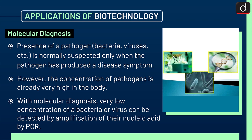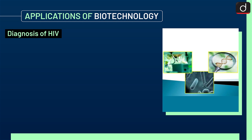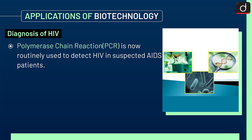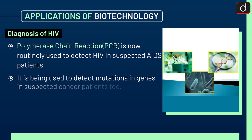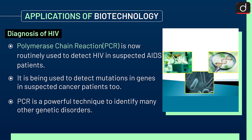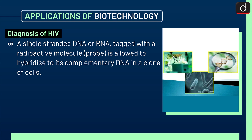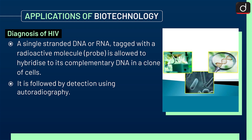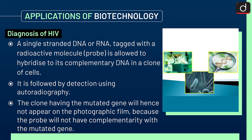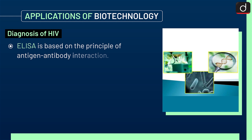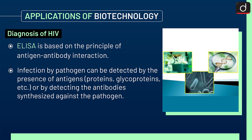Next is diagnosis of HIV. Polymerase chain reaction, i.e. PCR, is now routinely used to detect HIV in suspected AIDS patients. It is also being used to detect mutations in genes in suspected cancer patients. PCR is a powerful technique to identify many other genetic disorders. A single-stranded DNA or RNA tagged with a radioactive molecule — a probe — is allowed to hybridize to its complementary DNA in a clone of cells. It is followed by detection using autoradiography. The clone having the mutated gene will not appear on the photographic film because the probe will not have complementarity with the mutated gene. ELISA is based on the principle of antigen-antibody interaction. An infection by a pathogen can be detected by the presence of antigens, i.e. proteins, glycoproteins, etc., or by detecting the antibodies synthesized against the pathogen.